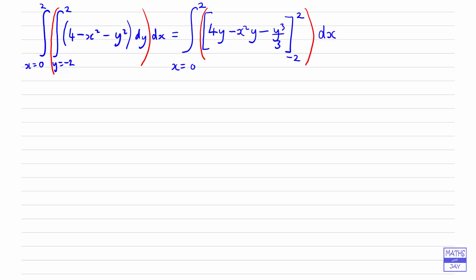So substituting in the limits, we put the 2 in first of all. So we've got 4 times 2 minus... Well, y is 2 and we still have x squared in there. That isn't going to change at the moment. We're just substituting in y. And then we've got 2 cubed over 3. So that's substituting in the top limit.